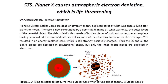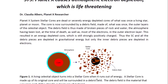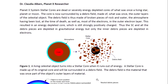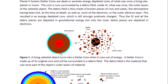Planidex Systems' stellar cores are dead or severely energy-depleted cores of what was once a living star, planet or moon. The core is now surrounded by a debris field made of what was once the outer layers of the celestial object. The debris field is made of broken pieces of rock and water, the atmosphere having been lost at the time of death, as well as most of the electrons in the outer electron layer.